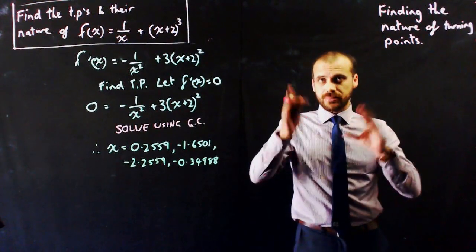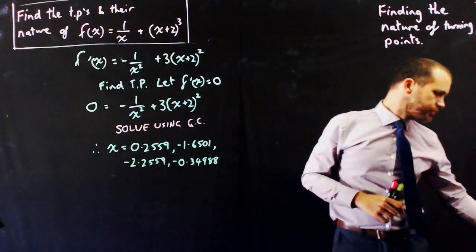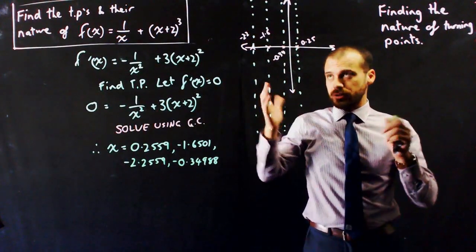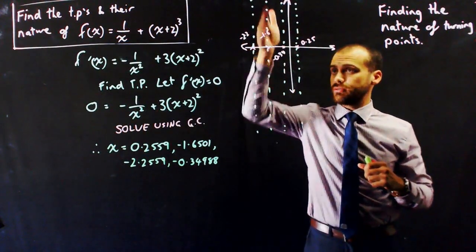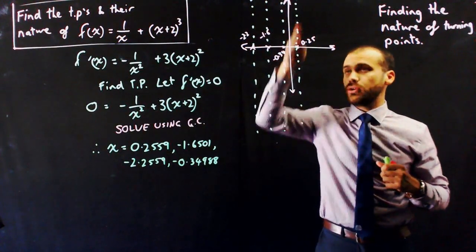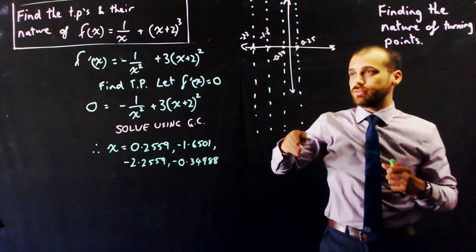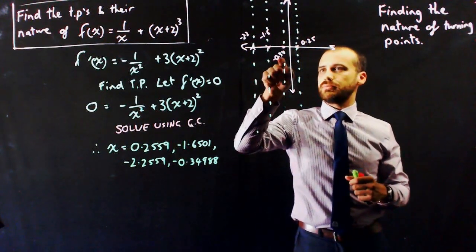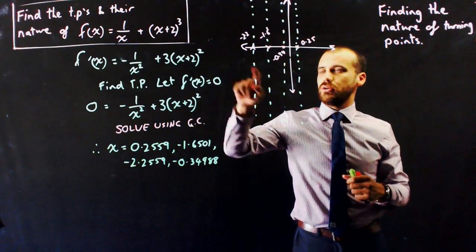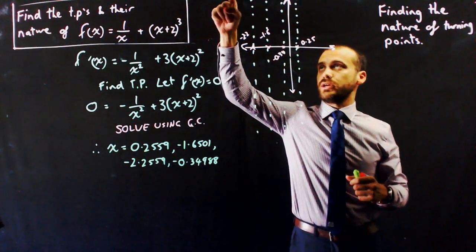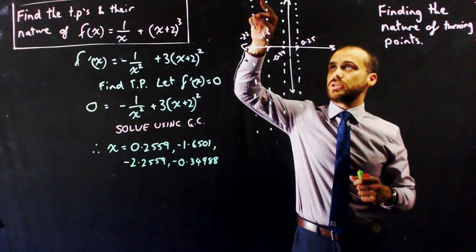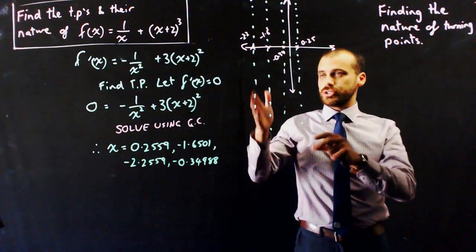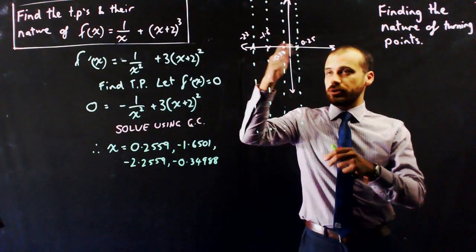I'm just going to do a rough mud map sketch so I can see that. A Cartesian plane, and the x-values of the turning points are -2.2, -1.6, -0.34, and positive 0.25. So maybe it goes like this. Maybe it goes up here, down here, up here, down here. Or maybe it's all the way up here somewhere, and it starts by moving upwards, turning, turning, turning, turning. I don't really know, but I just know that there's a turning point occurring on each of those x-values.